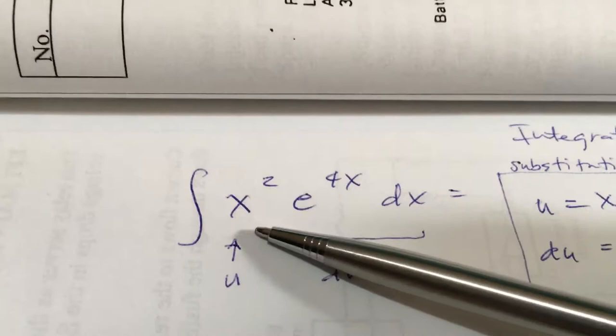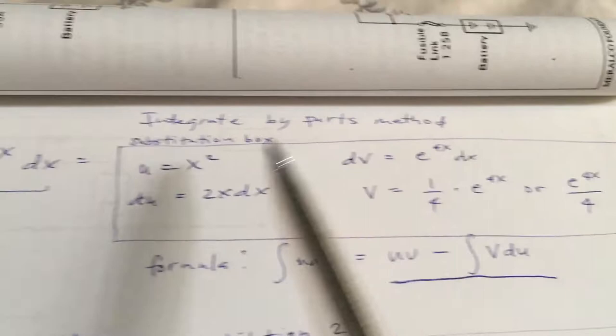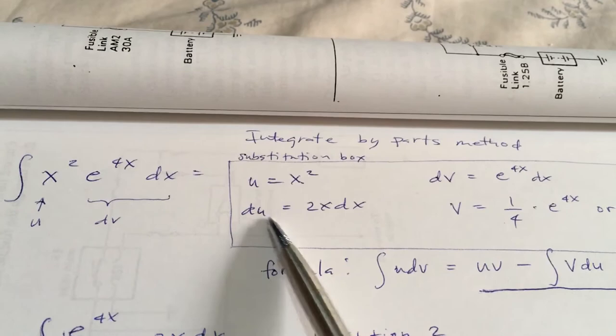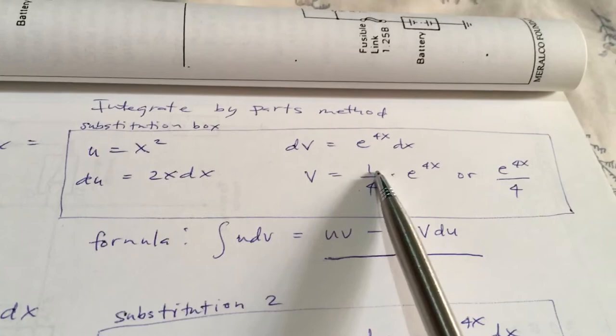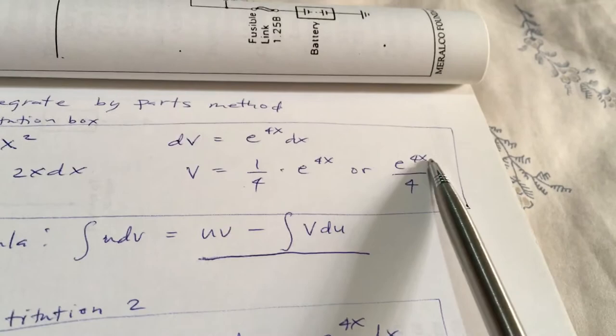Let us assign x squared as u, and e raised to the 4x dx as dv. Let us first make a substitution box. So u is x squared, and the differentiation of x squared will be 2x dx. The integration of dv — e raised to the 4x dx — will be 1 fourth times e raised to the 4x, or e raised to the 4x over 4.